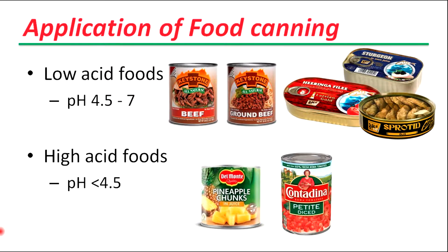Time and temperature calculations for canning processes are designed to destroy the most heat-resistant microorganisms, specifically the spores of Clostridium botulinum, which can produce a deadly toxin if they sprout and grow under the anaerobic conditions of canned foods. Acid foods with pH less than 4.5 can be processed safely at 212°F or 100°C — the temperature of boiling water — because Clostridium botulinum spores cannot grow in acidic conditions.